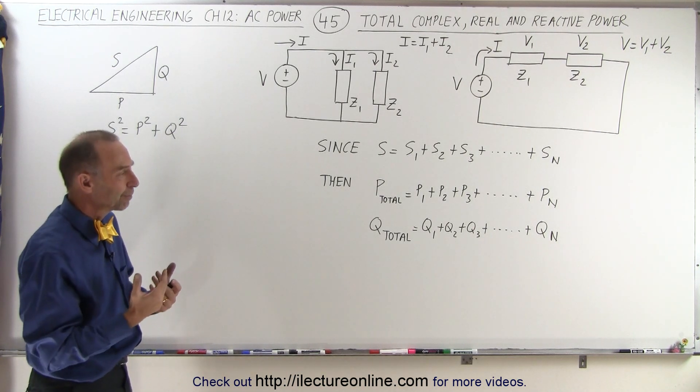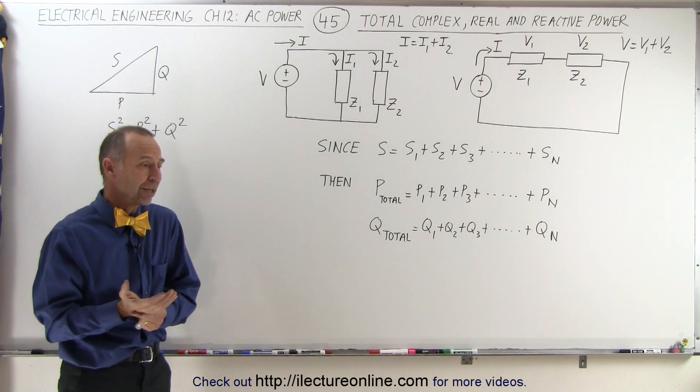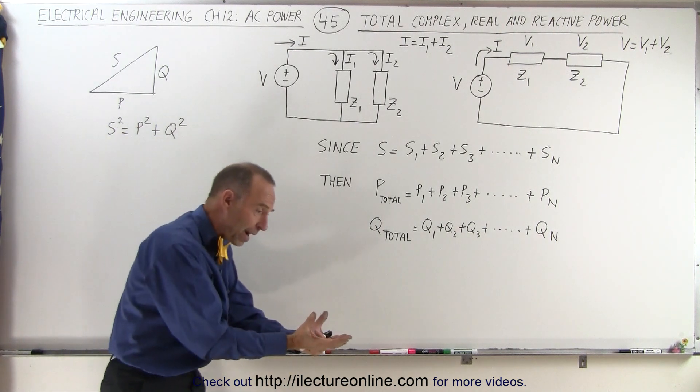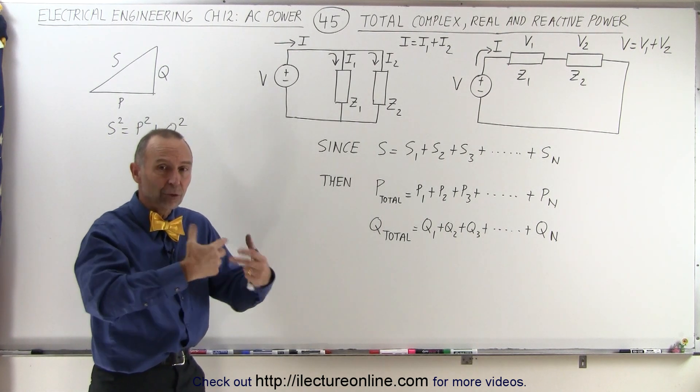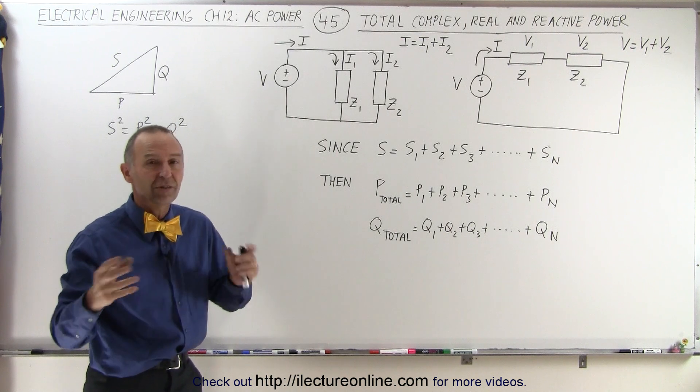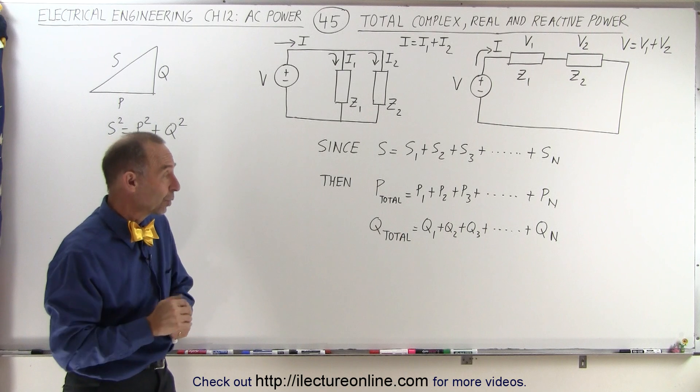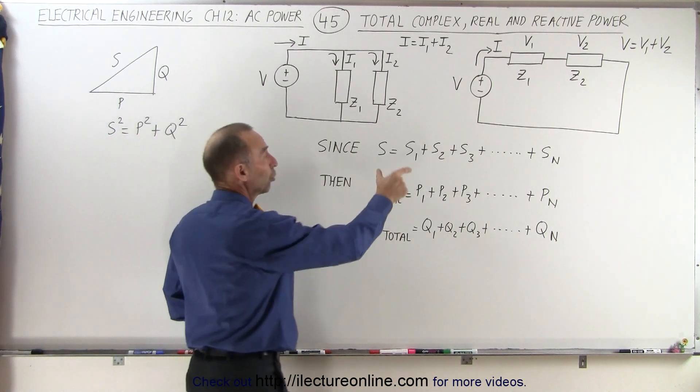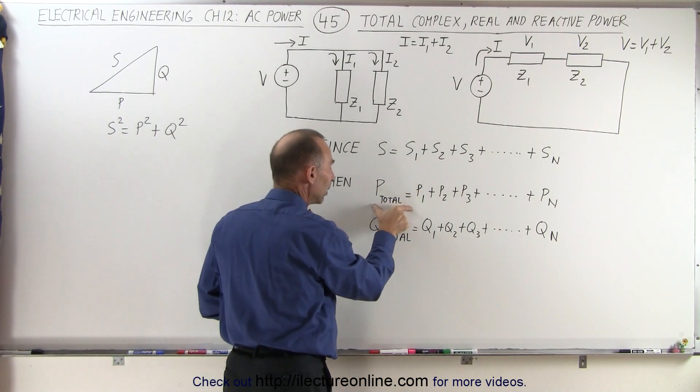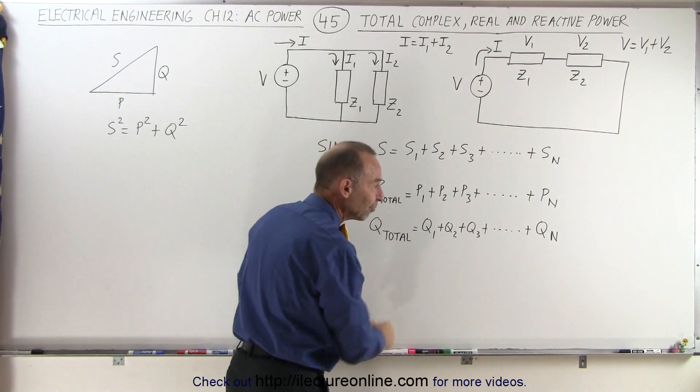That's really amazing. Well, actually, it's not so amazing when you think about it, because if you deliver a certain amount of power, then that power is going to be consumed by the individual impedances, and it doesn't matter where they are in the circuit. It's simply an algebraic sum, which makes it really easy. And it's that way for the total complex power, for the real power, and for the reactive power.